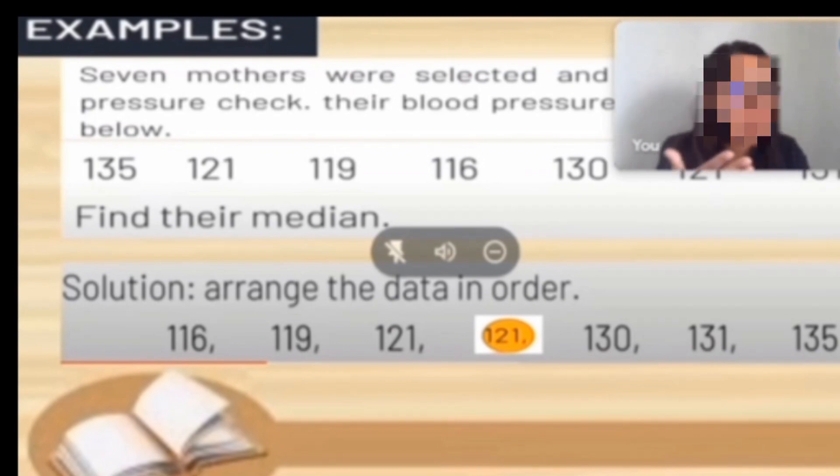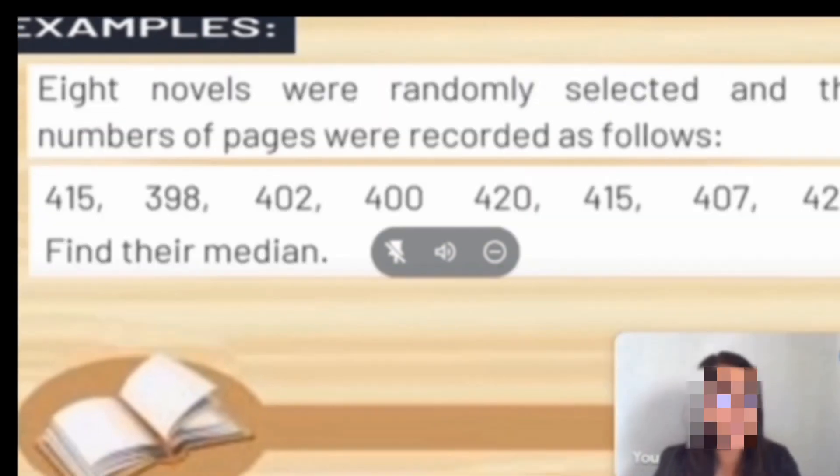You will count to the right side: 1, 2, 3. To the left side: 1, 2, 3. The middle value is 121. Let's proceed to our next example.